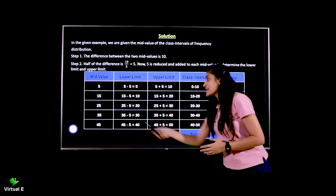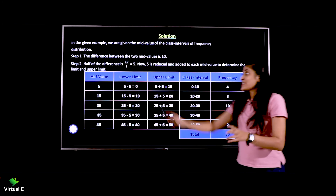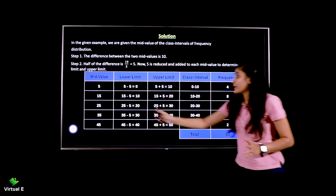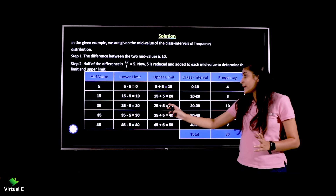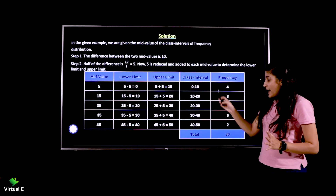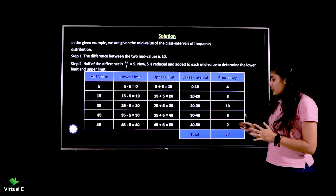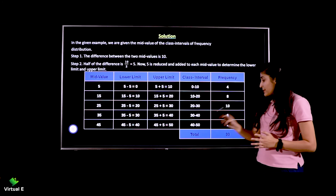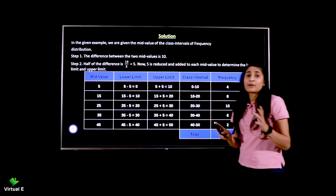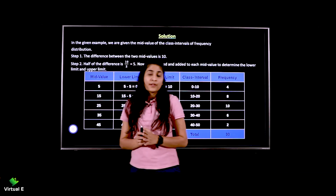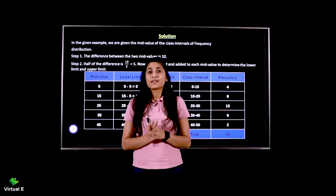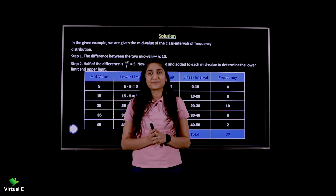Moving on to the next mid value 25: 25 minus 5 gives 20 and 25 plus 5 gives 30 — that makes it 20 to 30, and so on. You can have a look at the full solution. The frequencies mentioned earlier are carried forward. Finally, the total is sigma F and capital N. Here we end this chapter and will move on to the next chapter. Till then, keep watching and keep learning.